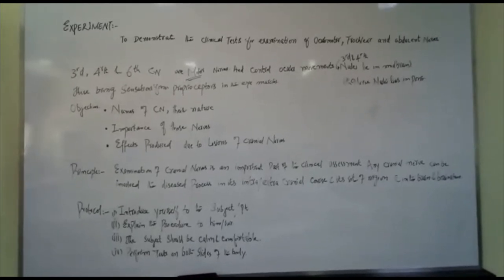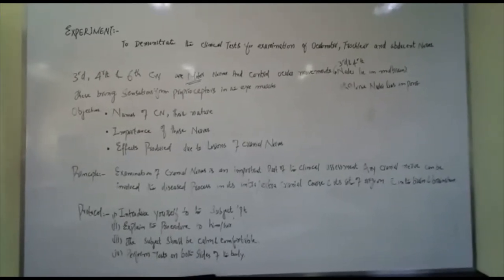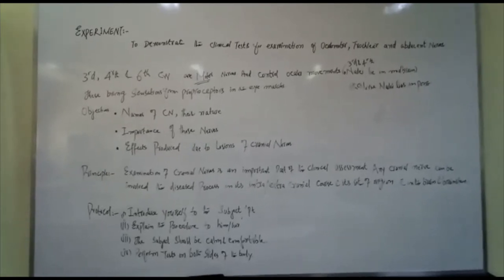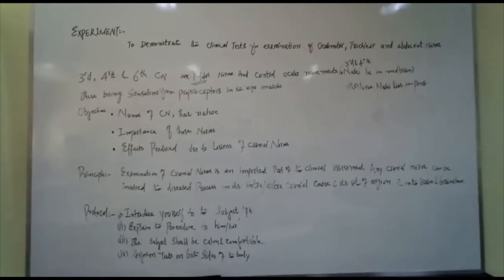Today I am going to demonstrate the clinical test for examination of oculomotor, trochlear and abducent nerves which are 3rd, 4th and 6th cranial nerves.